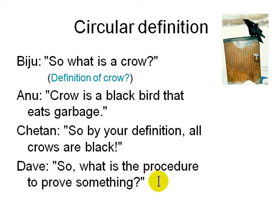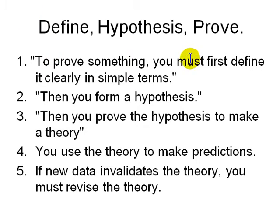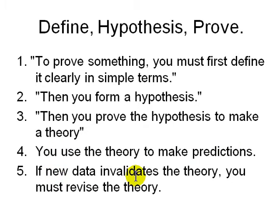Before proving something, you must define every single word precisely — including what a crow is and what black means — in clear, simple terms independent of the speaker. Someone from another continent should agree on whether something is a crow or not. Then you form a hypothesis, prove the hypothesis, make a theory, and use the theory to make predictions. If new data invalidates your theory, you must revise it. That is the general way in which knowledge proceeds.